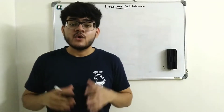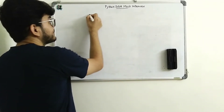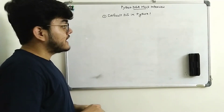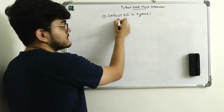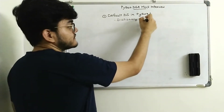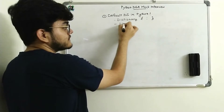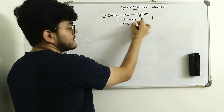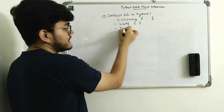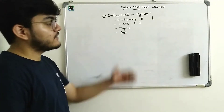Let's start with the first question: what are the default data structures in Python? I will write the question here. Pause the video and answer this question. So the first one is the dictionary data structure — in Python we can create a dictionary using curly brackets with keys and values separated by a colon. Then we have the list data structure, represented using square brackets. Then we have tuples, and then we have sets. So we have these four default data structures in Python.